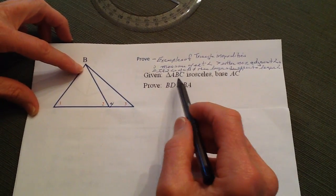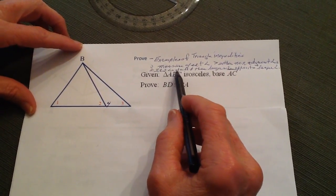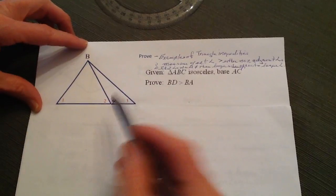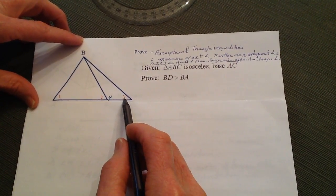The other one is that if you have two angles of a triangle that are not equal, for instance, you can see that number four and number three are not equal.